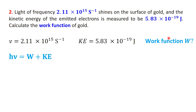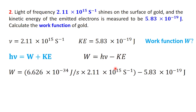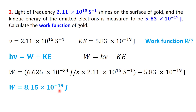We'll start from the photoelectric equation, then isolate the unknown, and finally substitute the values. The photoelectric equation is h nu equals w plus KE. Because we're solving for the work function, we rearrange it to: w equals h nu minus KE. Now let's plug in what we know. Planck's constant h is 6.626 times 10 to the power of minus 34 joule seconds, the frequency nu is 2.11 times 10 to the power of 15 per second, and the kinetic energy is 5.83 times 10 to the power of minus 19 joules. That gives a work function of 8.15 times 10 to the power of minus 19 joules.